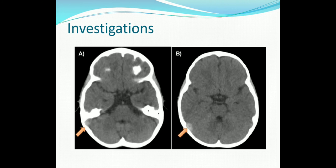Investigations: as described in the previous class, contrast-enhanced CT brain will show an empty delta sign, a filling defect, and MRI may also show the same features.